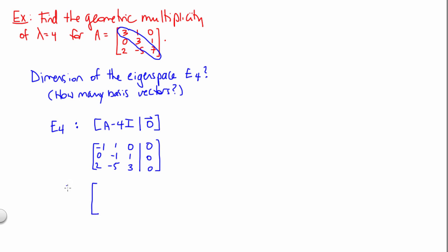So we'll do some row operations and get this into our REF. Let's divide row 1 by negative 1. That just creates a 1 in the upper left-hand corner.